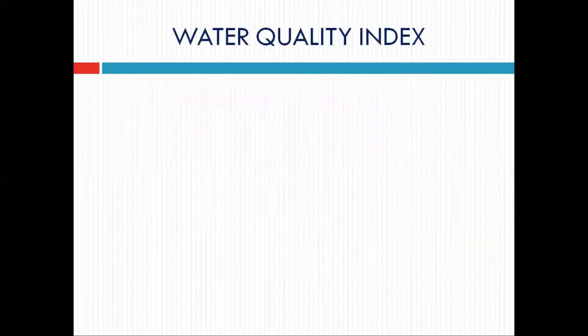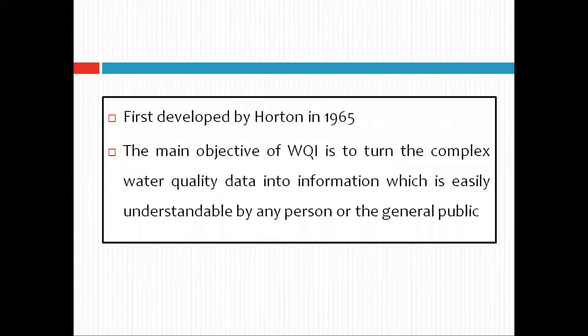So what is Water Quality Index? Water Quality Index was first developed by Horton in 1965. The main objective of WQI is to turn complex water quality data into information which is easily understandable by any person or the general public. Those analytical data of the different sites are very complex, and you won't be able to understand what they mean just by looking at them at a glance. However, if you use Water Quality Index, those data will be transformed into something which is very easy to understand.